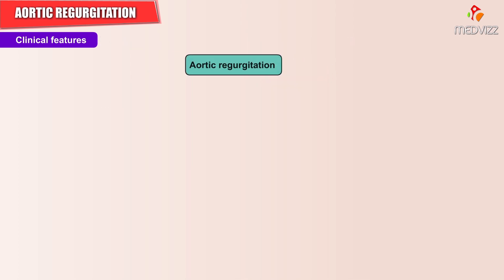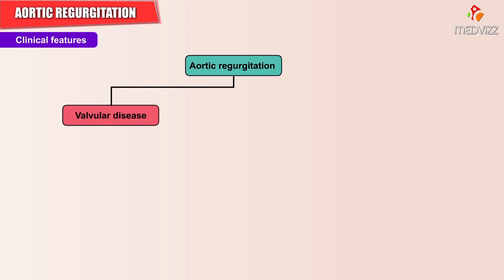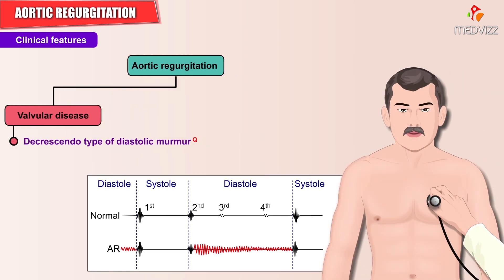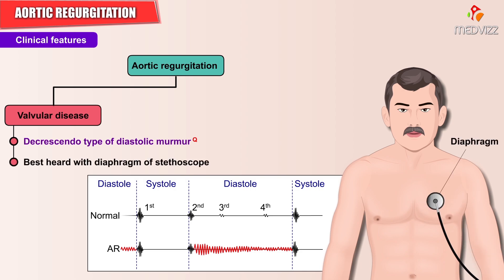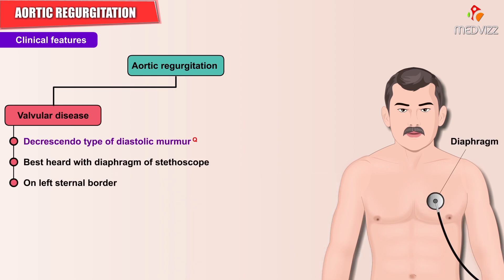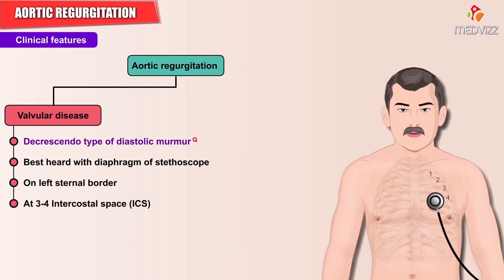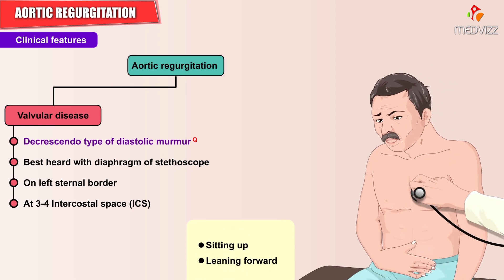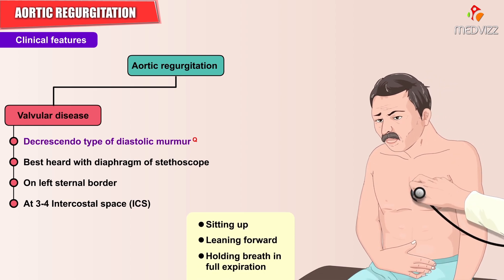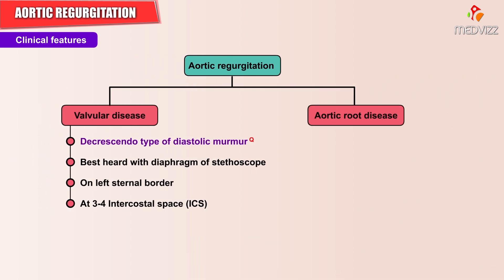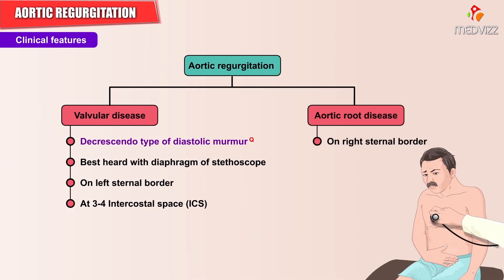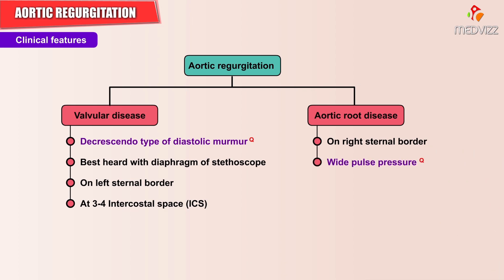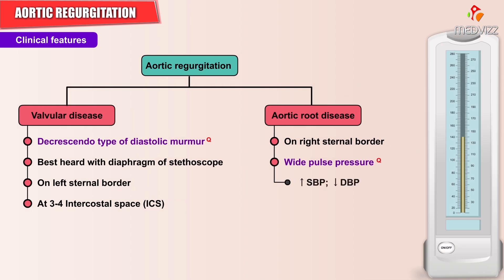When aortic regurgitation is due to valvular disease, a decrescendo-type diastolic murmur is best heard with the diaphragm of the stethoscope along the left sternal border at the third and fourth intercostal spaces, with the patient sitting up, leaning forward, and holding a breath in full expiration. When it is due to aortic root disease, it is best heard along the right sternal border.